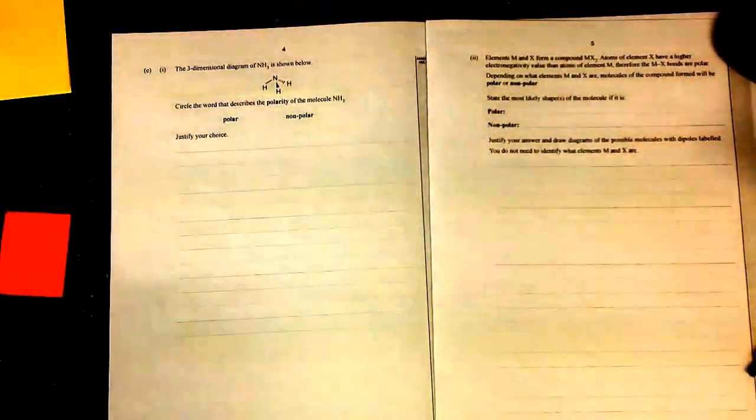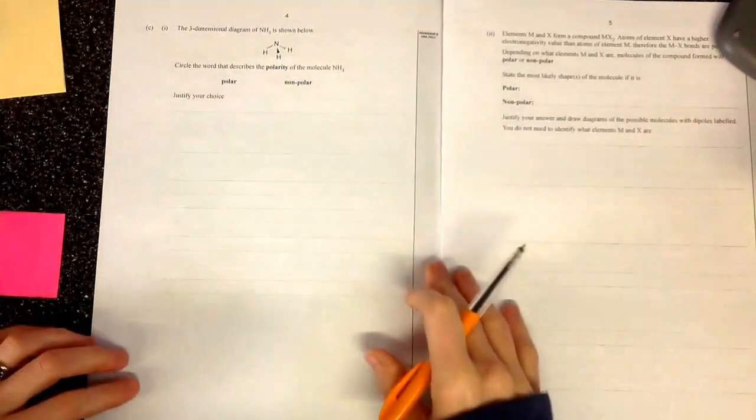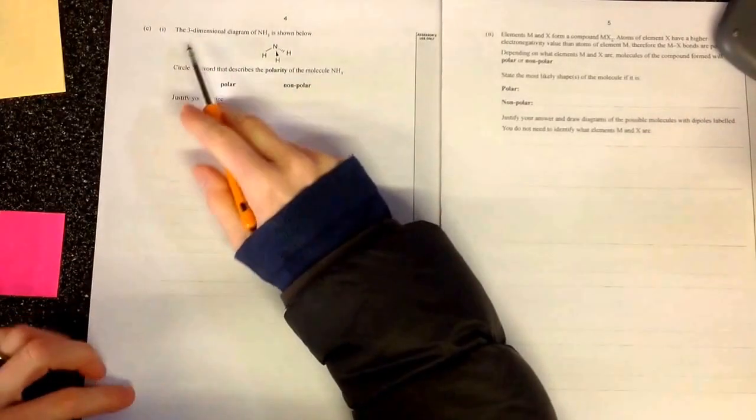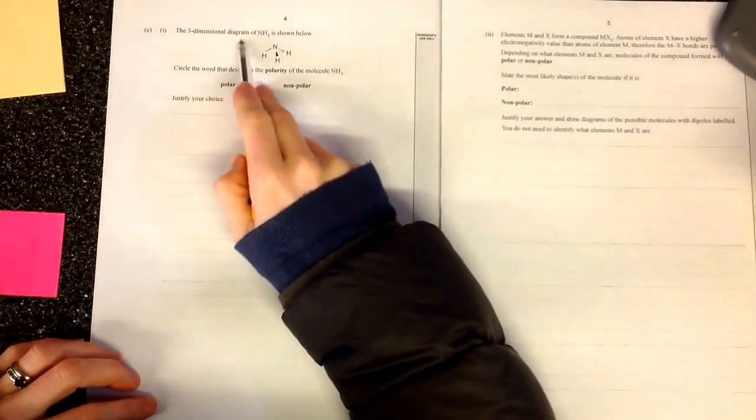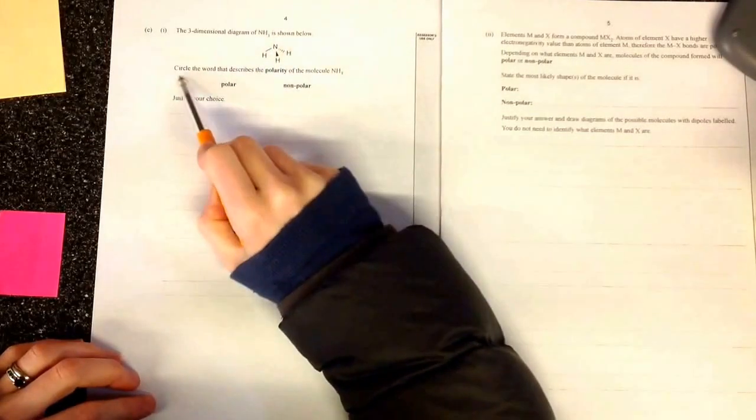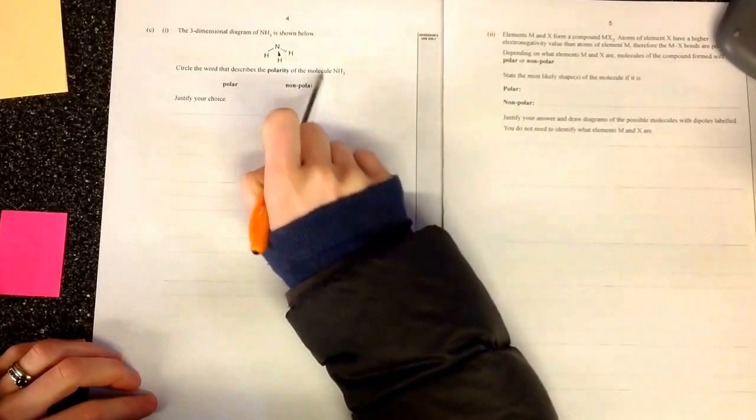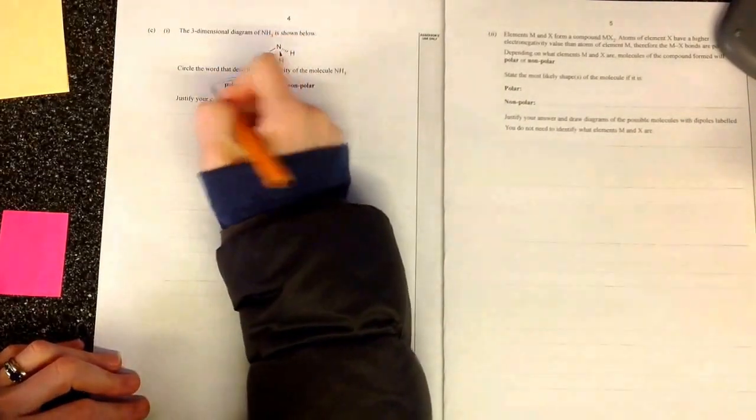This is the Bonding and Structure Level 2 Chemistry paper, 2013 paper. This is question 1c. The three-dimensional diagram of ammonia is shown below. Circle the way that best describes the polarity of the molecule ammonia NH3. It is polar.